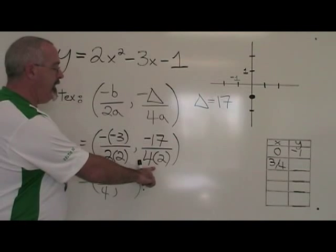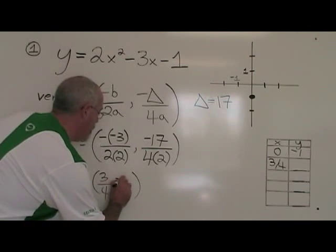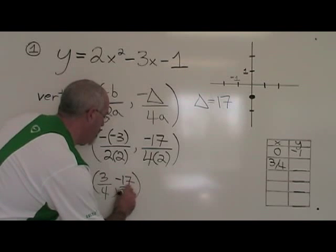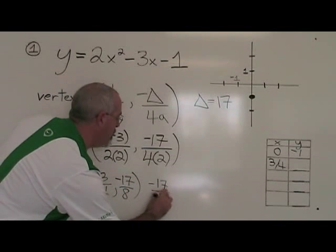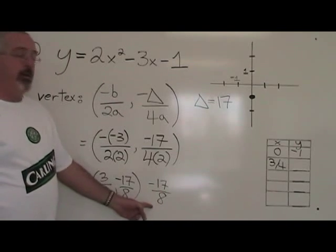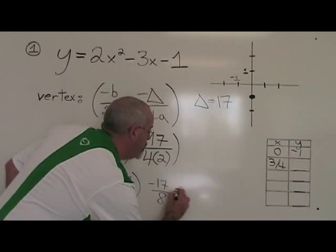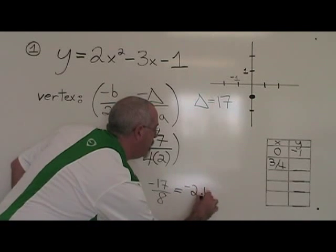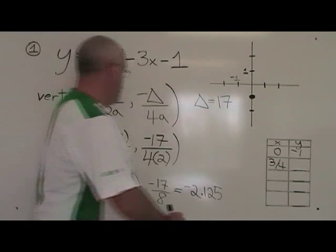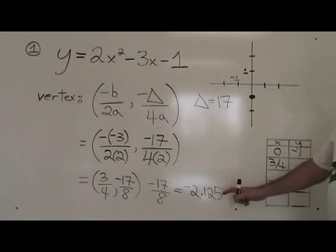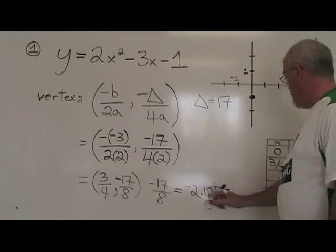4 times 2 is 8, so our y coordinate is negative 17 over 8. If you have trouble finding that on a graph, negative 17 over 8 is equal to negative 2.125. The y coordinate of our vertex is negative 17 over 8.